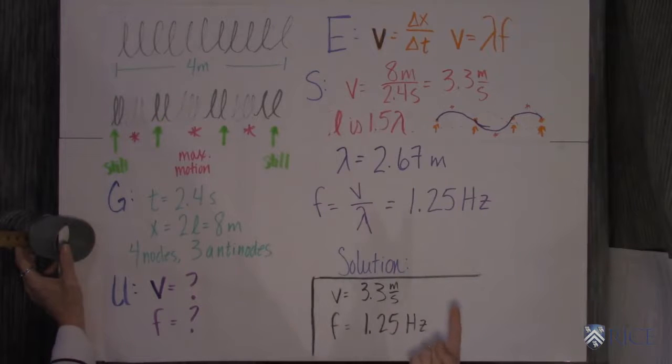So now we know the wavelength and we know the velocity. Frequency, its velocity over wavelength, is 1.25 hertz.